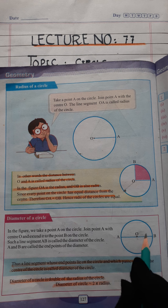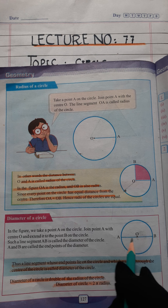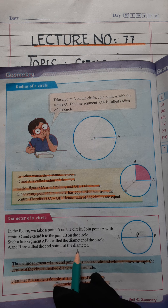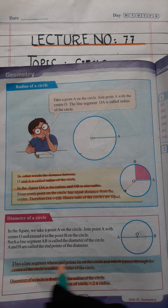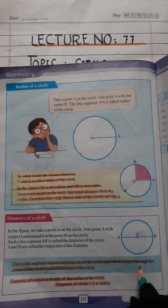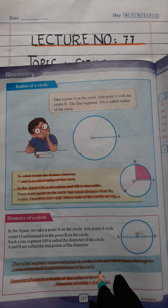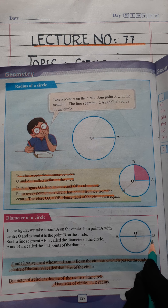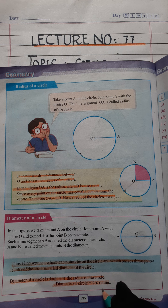Such a line segment AB is called the diameter of the circle. A line which passes through the center of the circle is called a diameter. A and B are called the end points of the diameter. The line segment whose end points lie on the circle and which passes through the center of the circle is called the diameter of the circle.